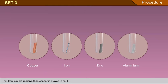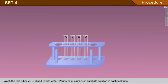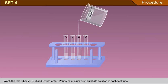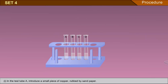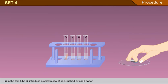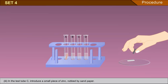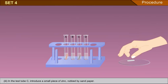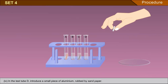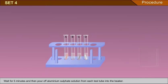Set 4: Wash the test tubes A, B, C and D with water. Pour 5 cc of aluminium sulphate solution in each test tube. In test tube A, introduce a small piece of copper rubbed by sandpaper. In test tube B, introduce a small piece of iron rubbed by sandpaper. In test tube C, introduce a small piece of zinc rubbed by sandpaper. In test tube D, introduce a small piece of aluminium rubbed by sandpaper. Wait for 5 minutes and then pour off aluminium sulphate solution from each test tube into the beaker.